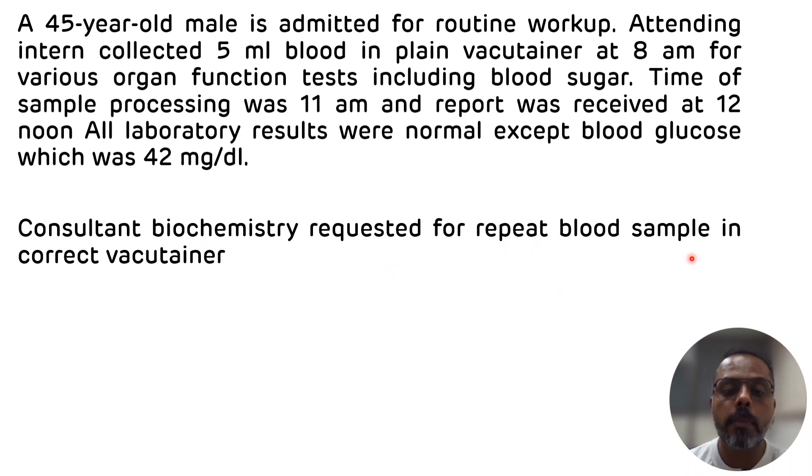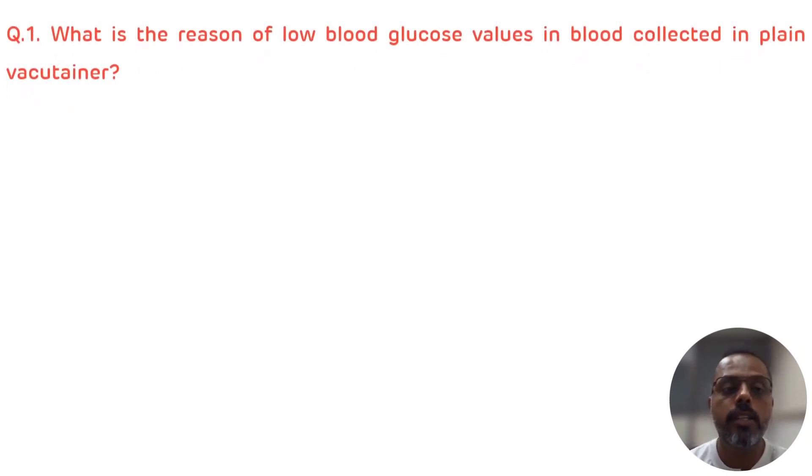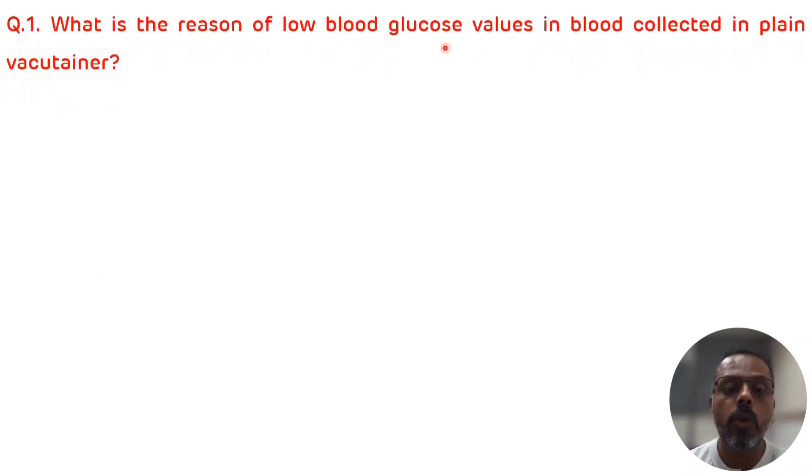The intern in biochemistry requested for repeat blood sample in correct vacutainer. Now let's see what are the questions. The first question is: what is the reason of low blood glucose value in blood collected in plain vacutainer?